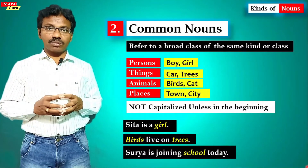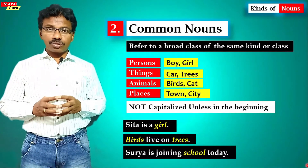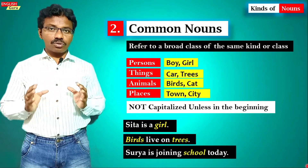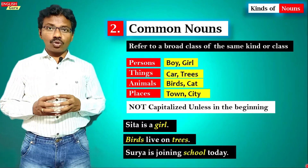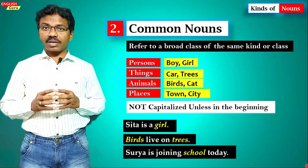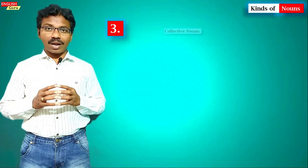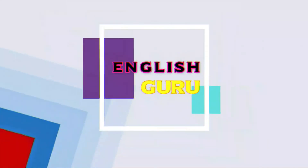Birds live on trees, so 'birds' and 'trees' are common nouns. Surya is joining school today, so the word 'school' is a common noun. So common nouns are commonly used for a common class or kind — the same kind of thing.